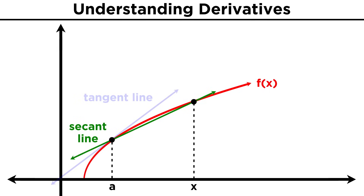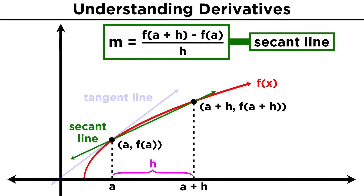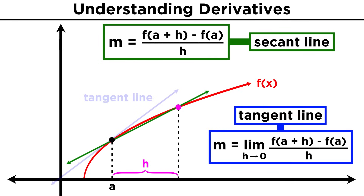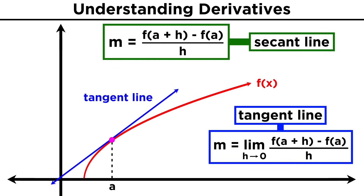We can express this another way, with the second point in terms of the first, by saying that x is equal to a plus some other quantity h. So h is the distance in the x direction from the first point to the next. That means this second point has the x coordinate a plus h, and the y coordinate f of a plus h. Now to get rise over run, we find f of a plus h minus f of a, over h. The slope of the tangent line is the limit of this expression as h approaches zero, meaning the distance between the two points becomes zero, and the points become one.